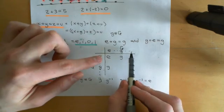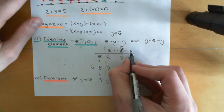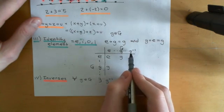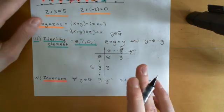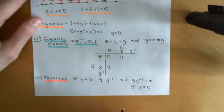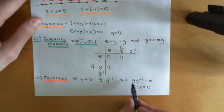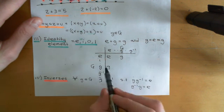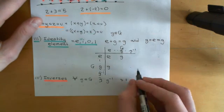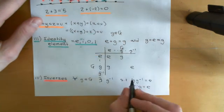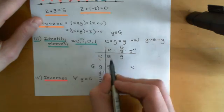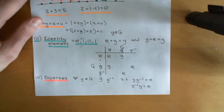What this says is that there must exist another element, little g inverse. Sometimes an element will be its own inverse, so sometimes little g inverse will actually be little g. But assuming little g inverse is not g and has a separate element within the group that is its inverse, then little g composed with g inverse has to equal the identity, and also g inverse composed with g — the other way round — also has to equal the identity.